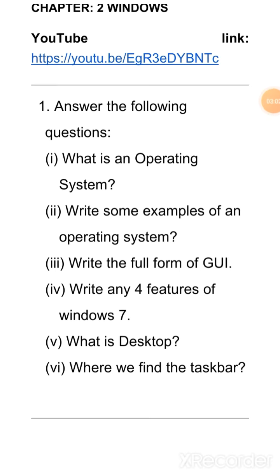The next chapter is Windows 7. The first question is, what is an operating system? An operating system controls the overall activity of a computer. It acts as an interface between the user and the hardware and enables them to work together.